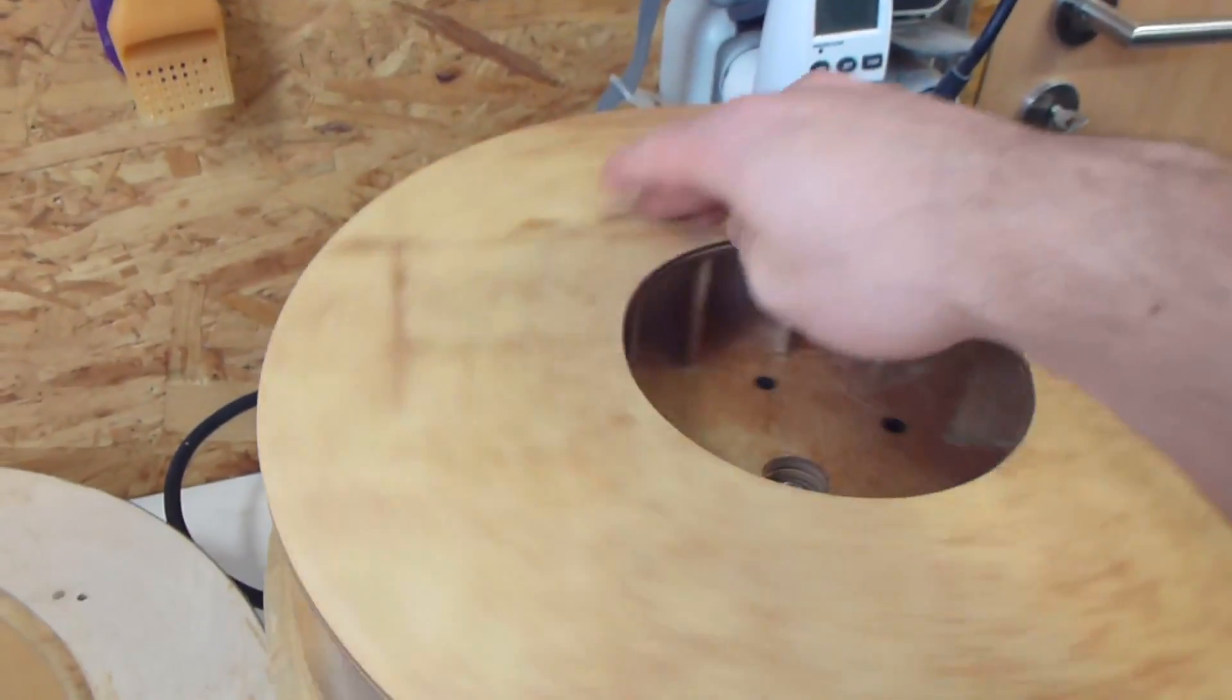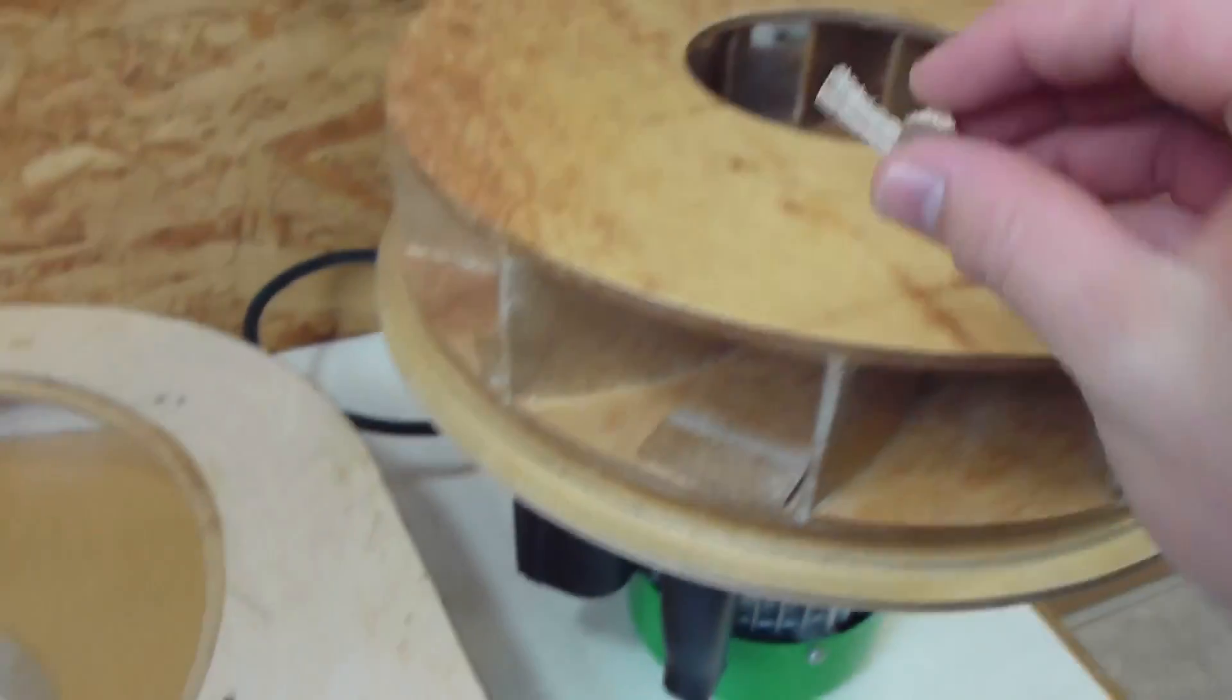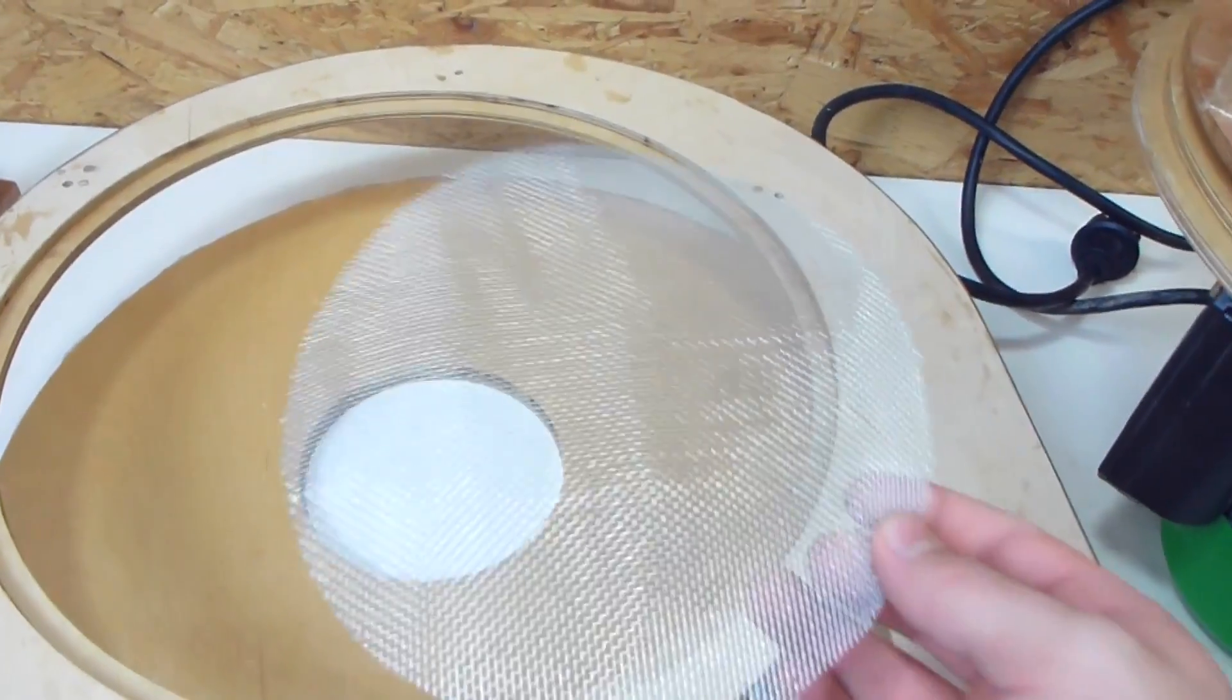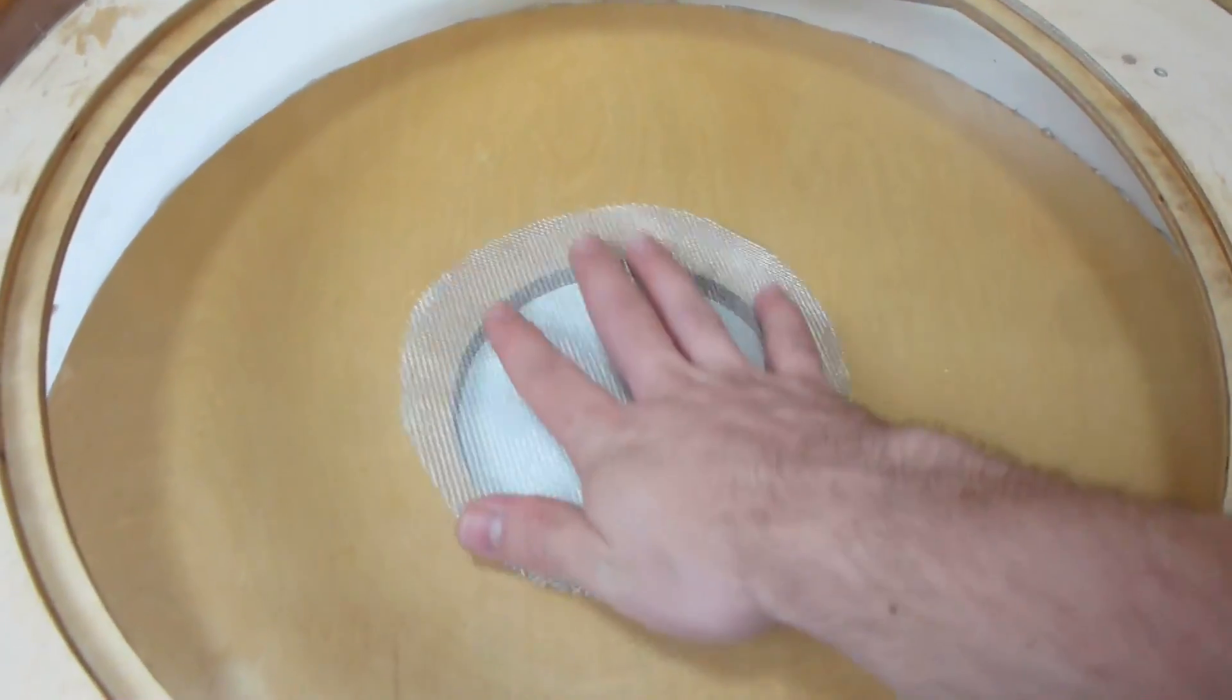Now because this is a wooden impeller it's not perfectly strong. So small pieces like these shouldn't pass it because they might damage it. So to prevent that from happening I'm gonna put this wire screen over the inlet.